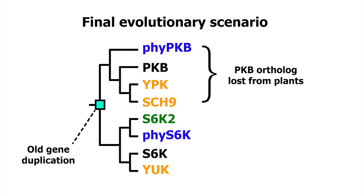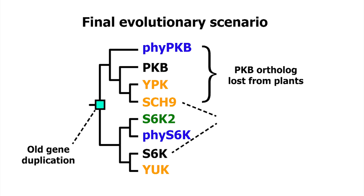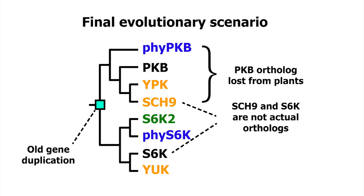This implies that indeed the PKB ortholog was lost from plants. So what does this mean? This implies that SCH9 is not the actual ortholog of S6K, and that to understand the Tor pathway in yeast, we would need to study this newly found YAK protein.